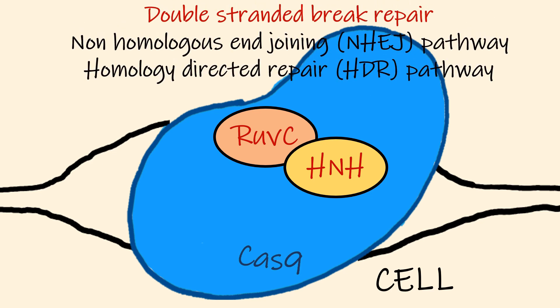The resulting double-stranded break is then repaired by one of the two general repair pathways: the efficient but error-prone non-homologous end-joining pathway or the less efficient but highly faithful homology-directed repair pathway. The repair can result in amino acid deletion, insertion, or frameshift mutation which ultimately leads to a loss of function of the target gene.